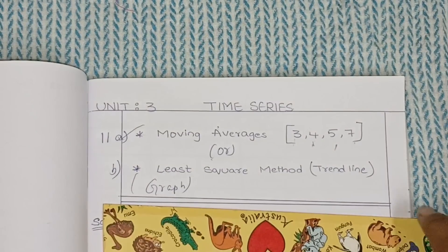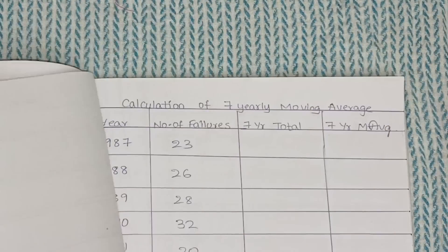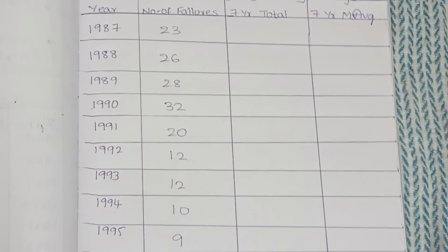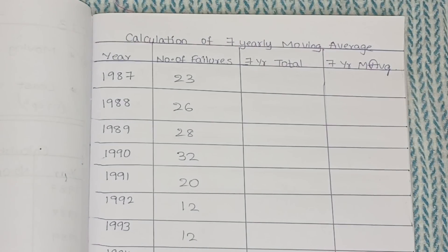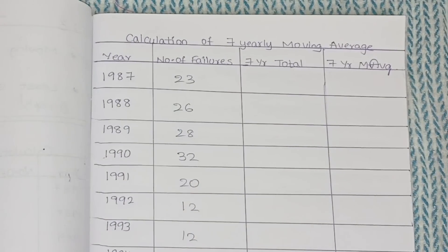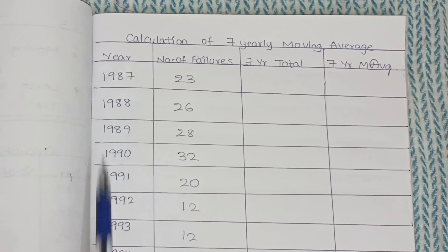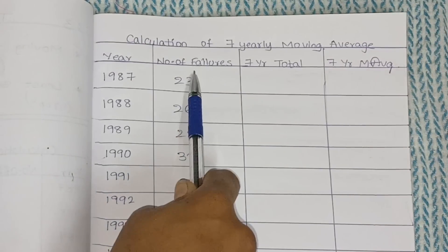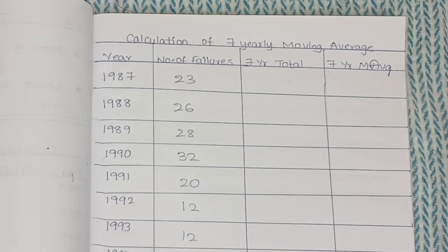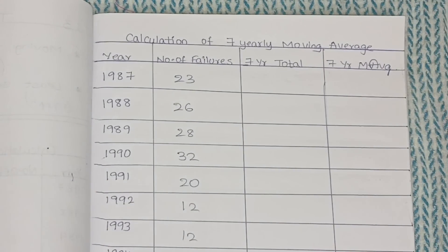First we will go with the seventh, means seven years moving averages. Here you see the question — calculation of seven years moving average. They will give years and some number, like number of failures, whatever it may be. You need to calculate the seven years moving average. The columns you will have are: year, number of failures (whatever they have given), seven years total, and lastly seven years moving average.